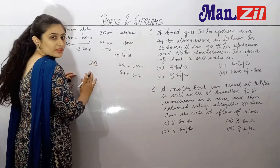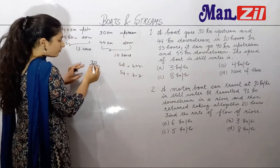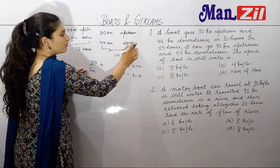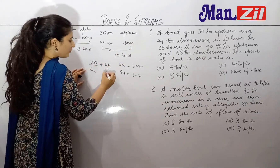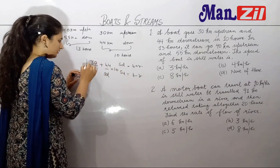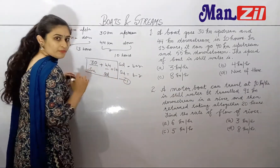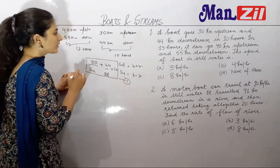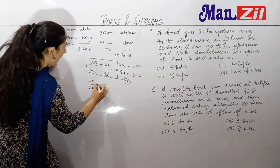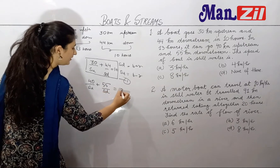So, 30 km distance travelled upstream — for that speed is speed of upstream. And 44 km in downstream, so distance upon speed. That equals 10 hours. This is the first equation. Our second equation is: 40 km upstream and 55 km downstream in 13 hours.